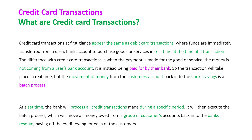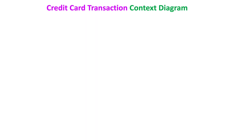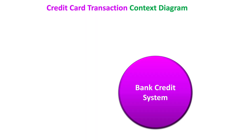We're going to illustrate this now, showing both why it appears as real-time when you make the purchase, and why it's essentially a batch process behind the scenes. Let's first look at it as a context diagram — our system is going to be the banking credit system.